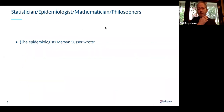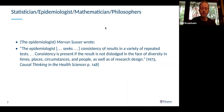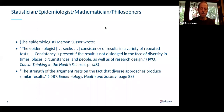The epidemiologist Mervin Susser wrote that the epidemiologist seeks consistency of results in a variety of repeated tests. Consistency is present if the result is not dislodged in the face of diversity in times, places, circumstances, and people, as well as of research design. The strength of this argument rests on the fact that diverse approaches produce similar results — emphasizing diversity, as opposed to the TOPS-DADOS-DARP sequence where in fact the same study was done three times.